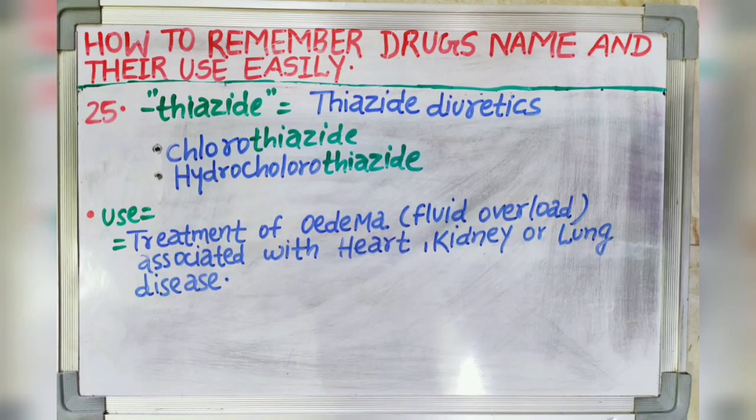Next suffix is -thiazide. It indicates thiazide diuretics. Drugs like chlorothiazide and hydrochlorothiazide are used in treatment of oedema. Oedema is a fluid overload condition associated with heart failure, kidney or lung disease, for which thiazide diuretics are used.